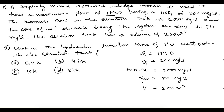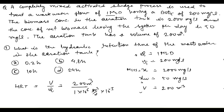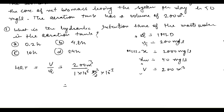First, we have to find the hydraulic retention time (HRT) of wastewater in the aeration tank. HRT is simply V divided by Q. Both are given directly, so we just divide: 200 m³ by the discharge of 1 MLD, which is 10⁶ liters per day. Converting units gives 10⁻³ m³ per liter, so HRT = 0.2 days.